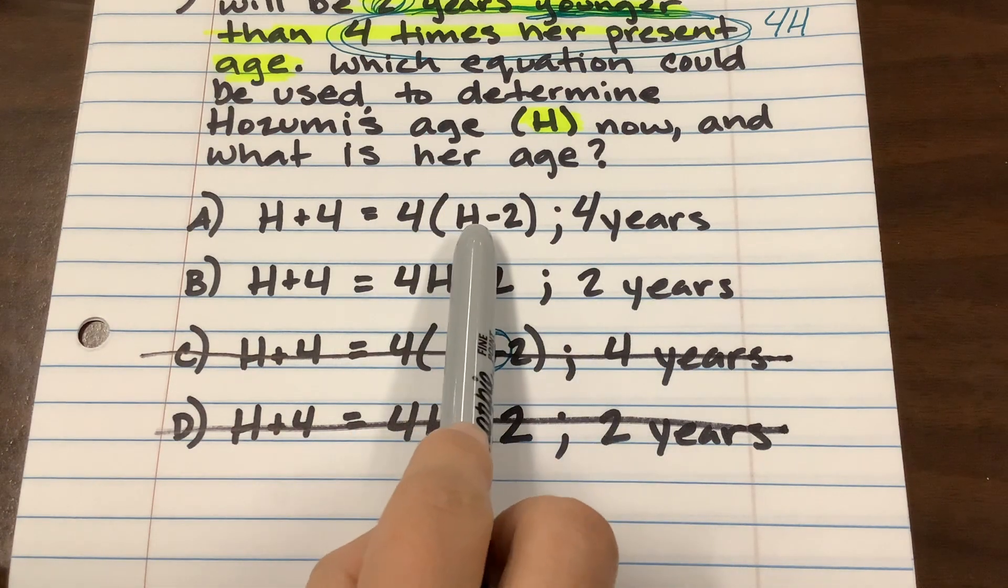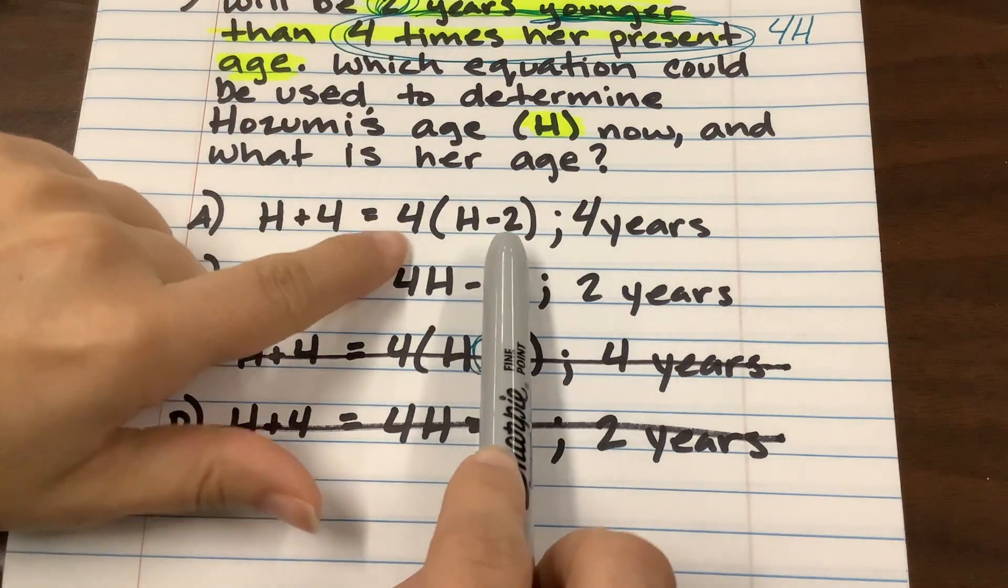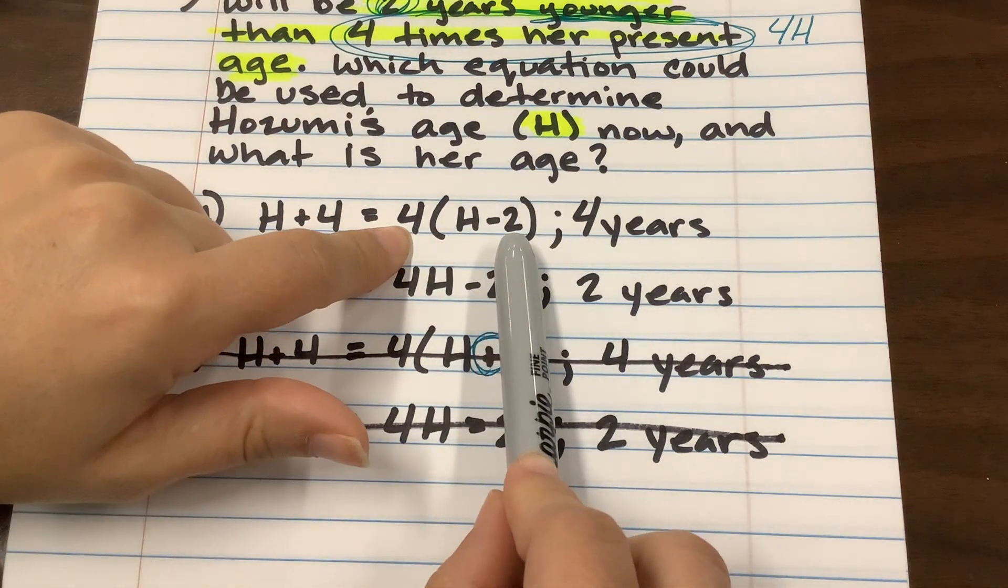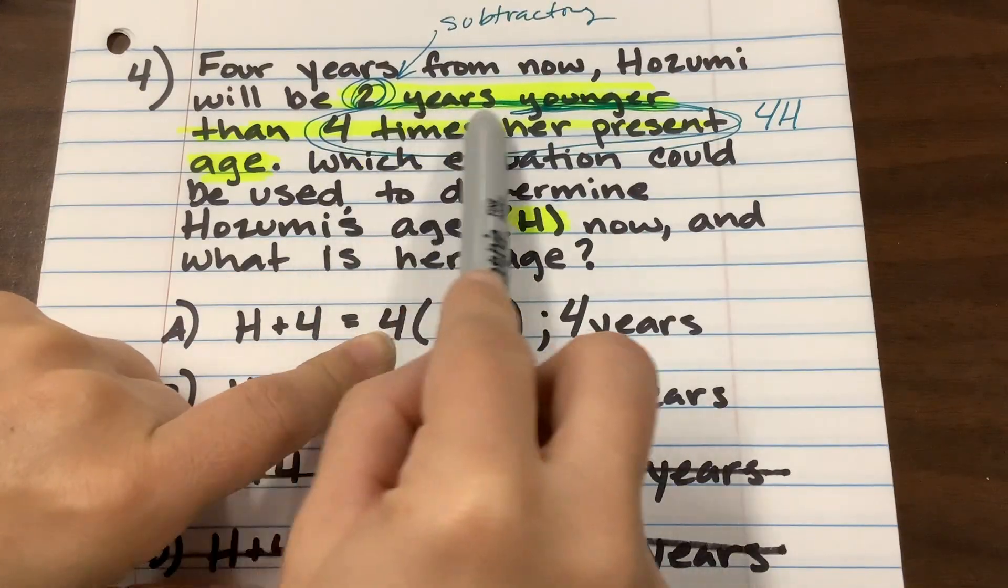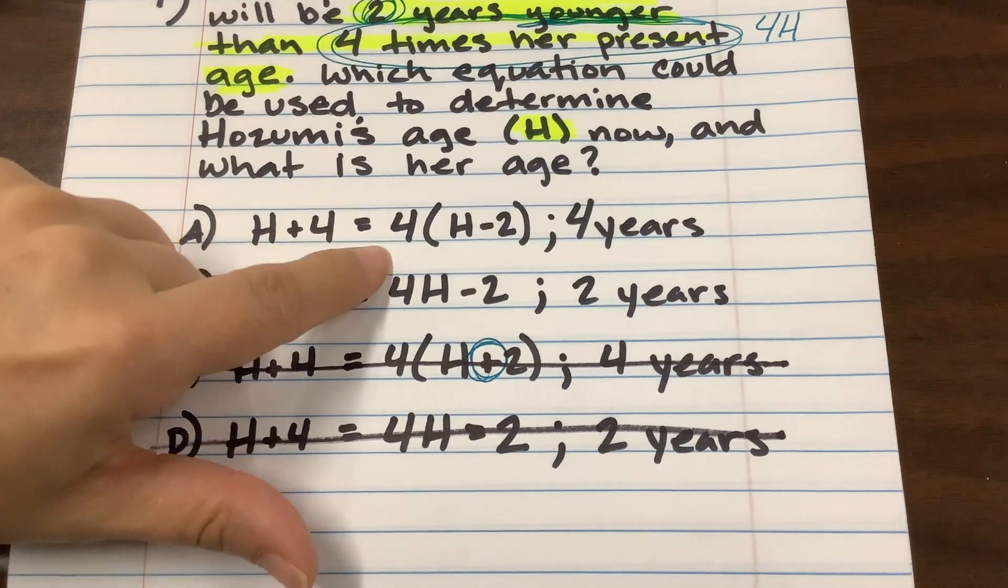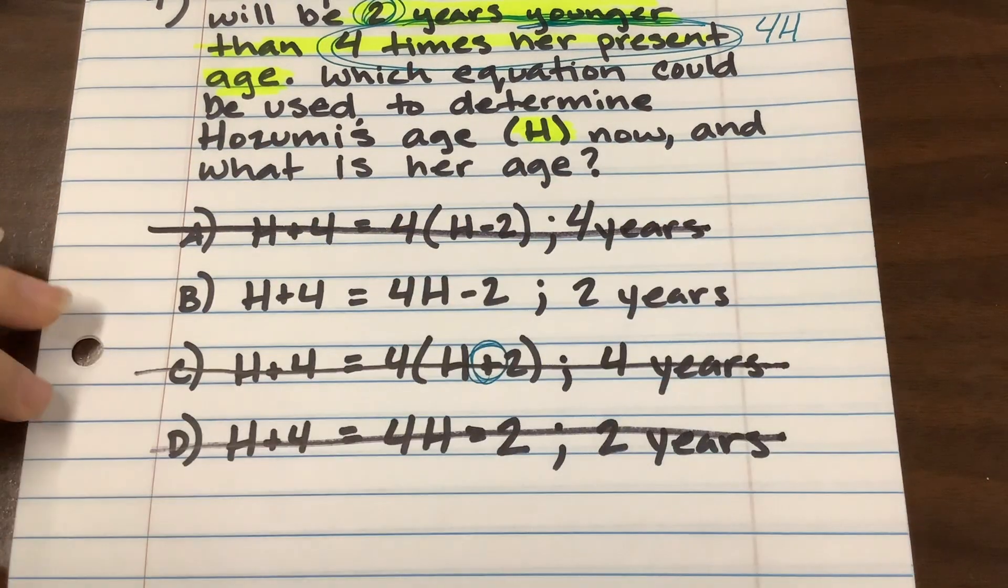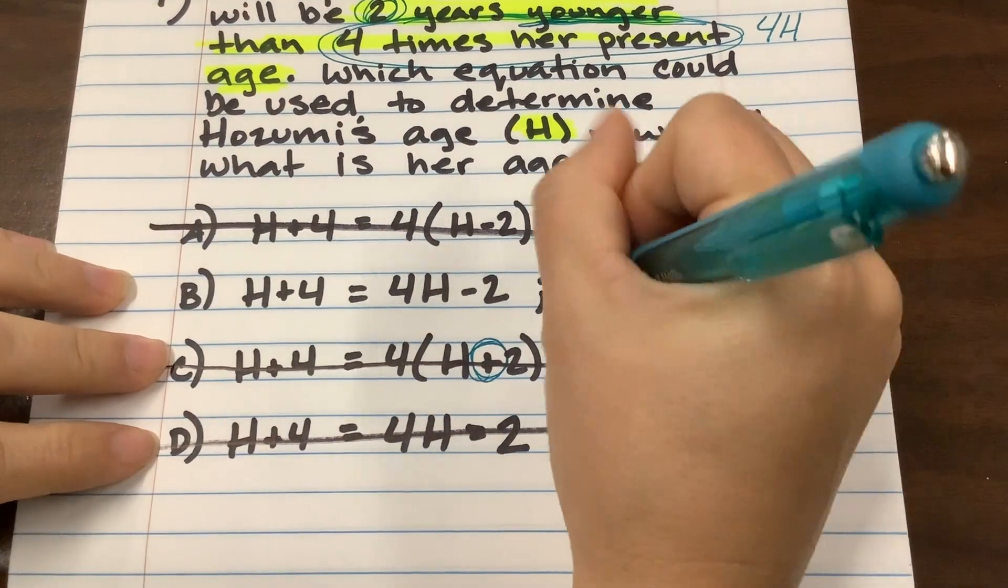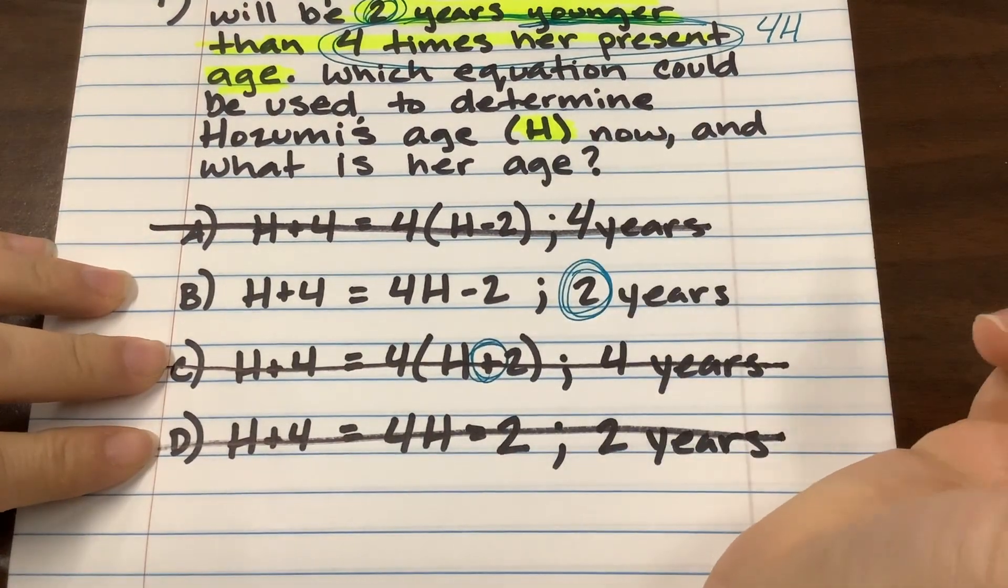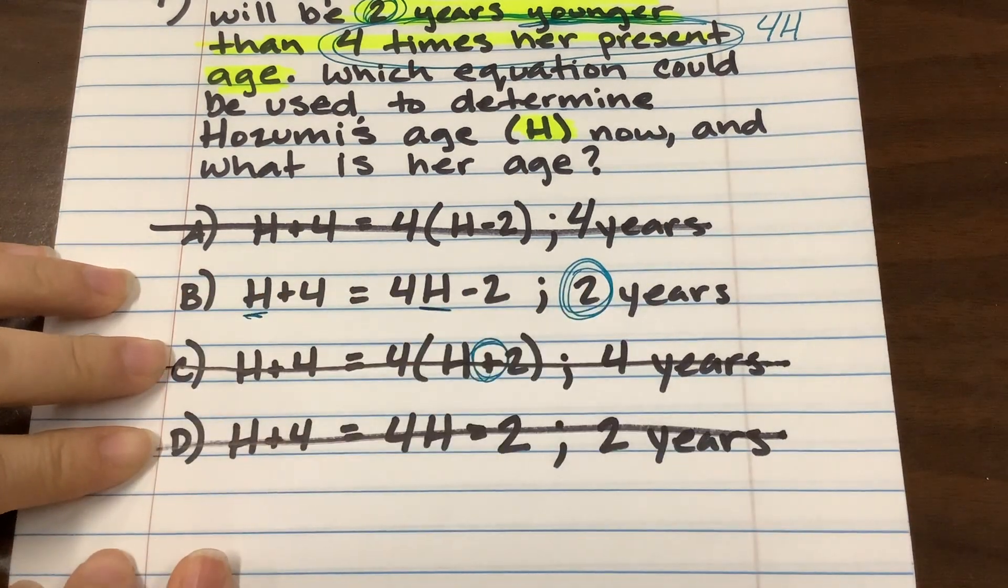Either she's four years old or she's two years old, but this is four times H, her age, which we did say that would happen. But what's four times two? Eight. And so we're not eight years younger, we're two years younger. So we don't need the distributive property. So it should be answer choice B that's left. And what we want to do to verify that is to take the two years, they're saying she's two years old, put it in place of the H and make sure it makes sense.